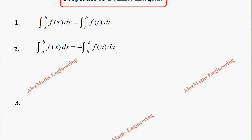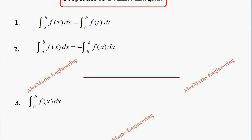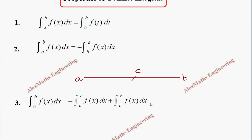Third property: when we have integral a to b of f(x) dx, suppose the limit is from a to b. If we take some value c in between a and b, then this integral from a to b of f(x) dx can be split into two parts: integral a to c of f(x) dx plus integral c to b of f(x) dx.